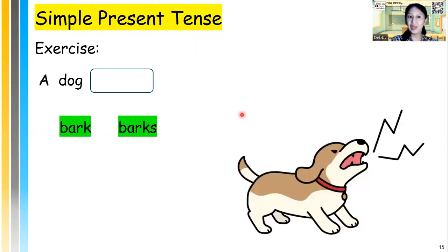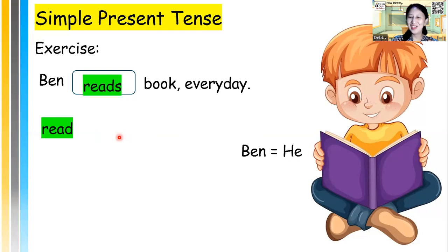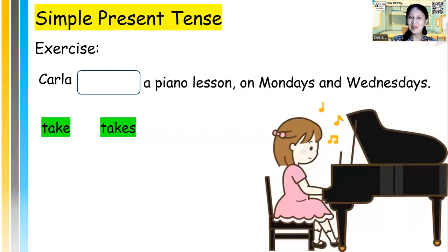It's a dog, right? A dog means an animal. Usually we replace it with it. So a dog bark or barks. It barks. Good job. Next one, Beni. Beni is the boy, so Beni is the same with he. The subject Beni read or reads book every day. Beni reads. Good job, wonderful. Next, Carla. Carla take or takes a piano lesson on Mondays and Wednesdays. Carla is a she, so Carla takes a piano lesson. Excellent.